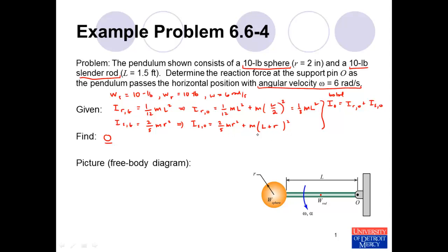We are given everything we need. The weight is 10 pounds for each object; dividing by 32.2 ft/s² gives us mass in slugs. We know R, we know L, so we can substitute in. Plugging in and adding them together, we get that the total mass moment of inertia I_O is approximately 1.10 slug·ft².